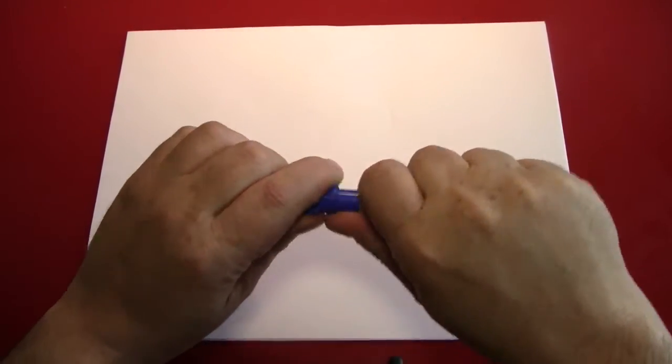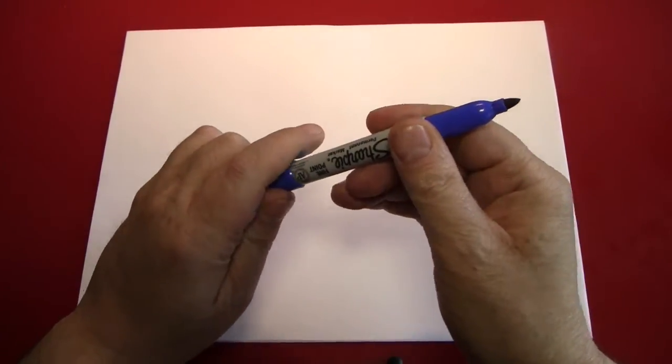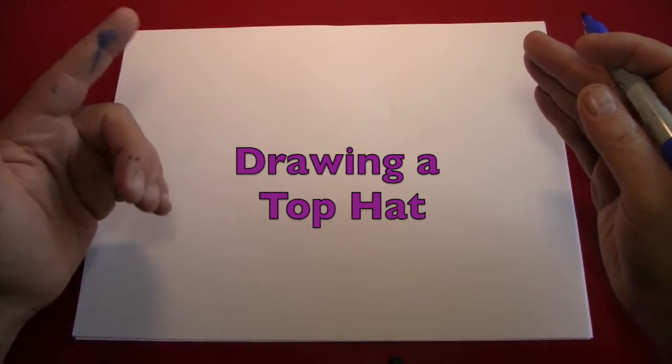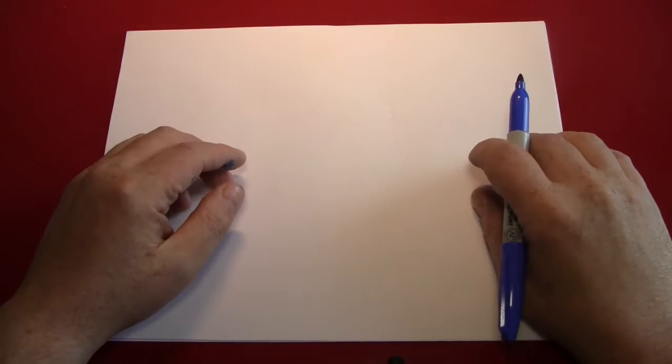Hello again, everybody. It's the Reverend Jay Goldstein, and welcome to another episode of Doodling with Reverend Jay. Today's episode, we're going to be drawing a top hat, because I drew one yesterday and I didn't explain how. So let's make up for that now.